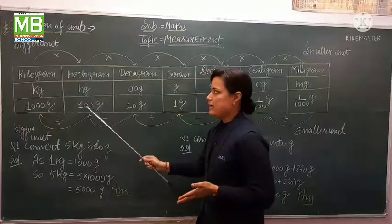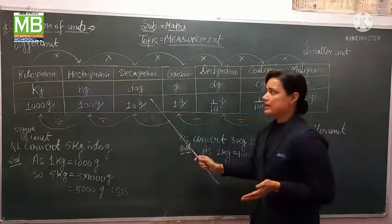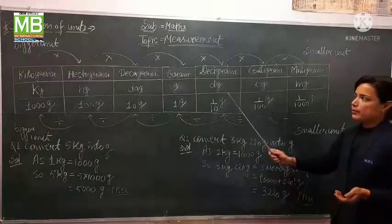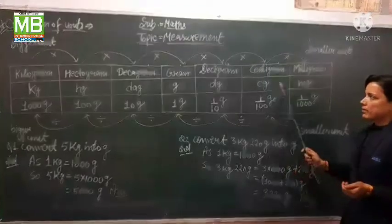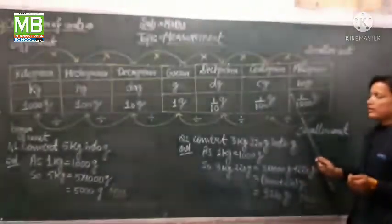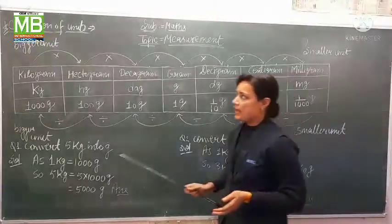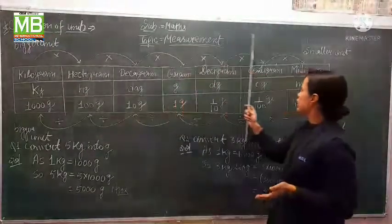1 hg is 100 g, 1 dag is 10 g, 1 g is 1 gram, 1 dg is 1/10 gram, 1 cg is 1/100 gram, 1 mg is 1/1000 gram. When converting from bigger unit to smaller unit,